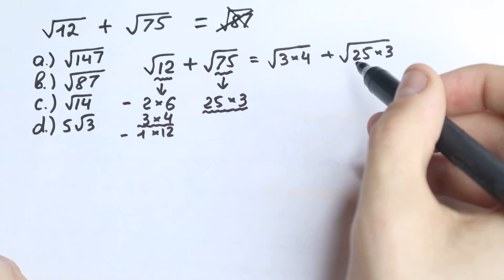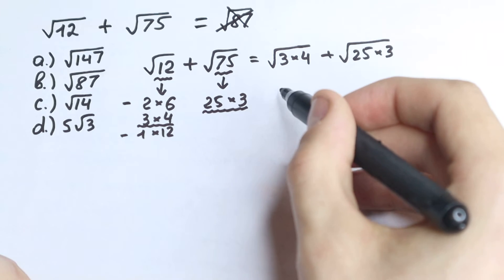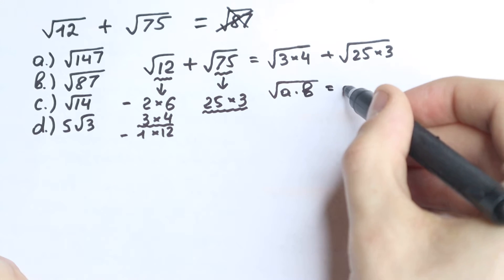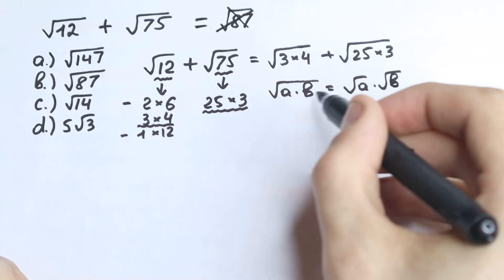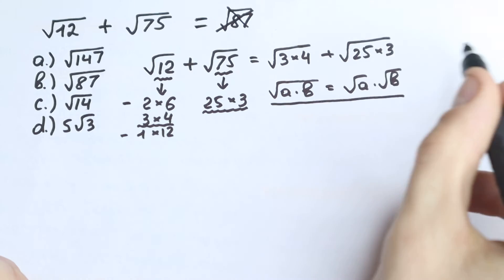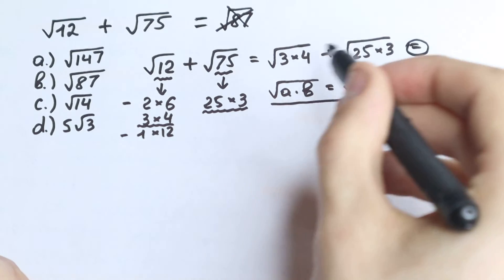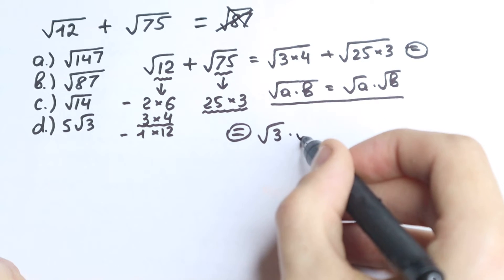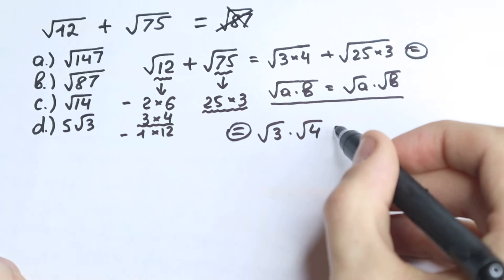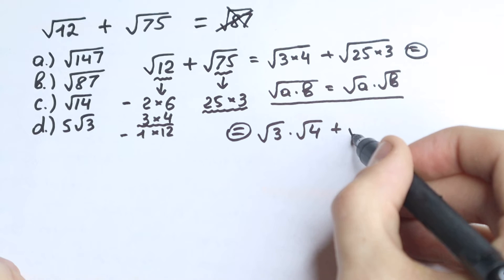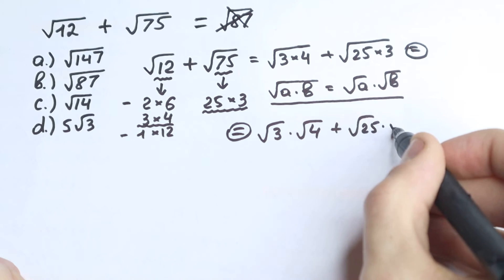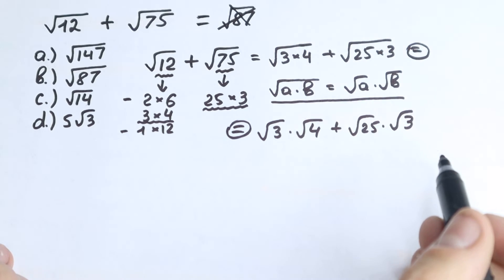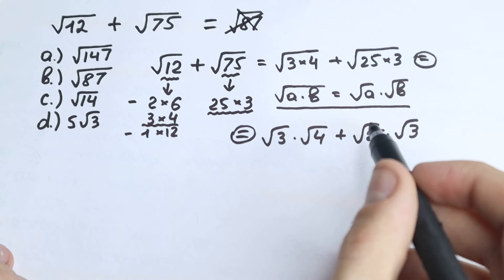Now we need a really important rule with square roots: if we have square root of a times b, we can write it as square root of a times square root of b. This is a great rule that we need right here. So let's separate the square roots: we have square root of 3 times square root of 4, plus square root of 25 times square root of 3. We just write it in another way, separating the square roots.